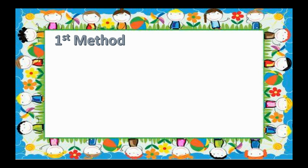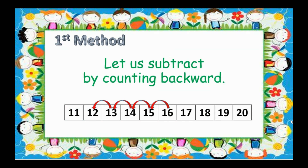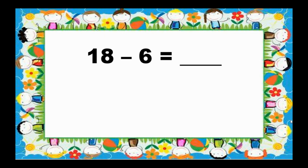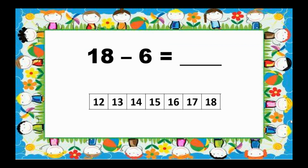Let's use the first method — let's subtract by counting backward. Let's have 18 minus 6. We will use the number tape and start from 18, then count back 6 times. 18, 17, 16, 15, 14, 13, 12. So, 18 minus 6 equals 12.